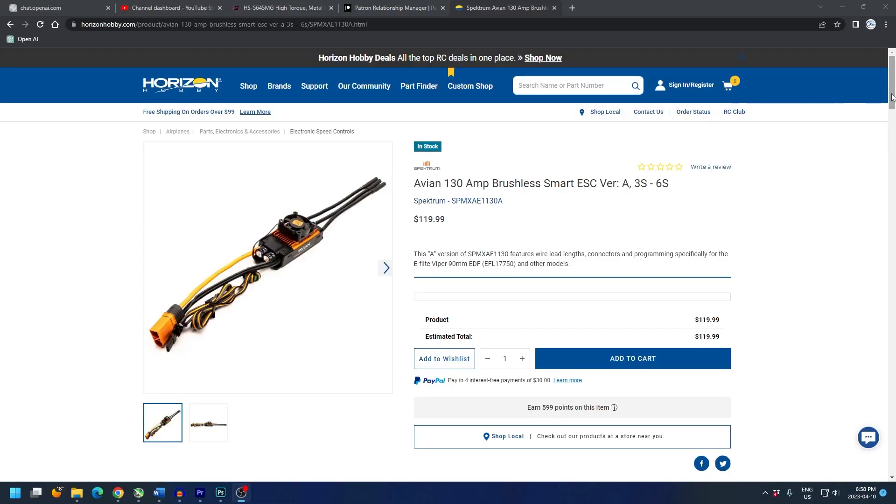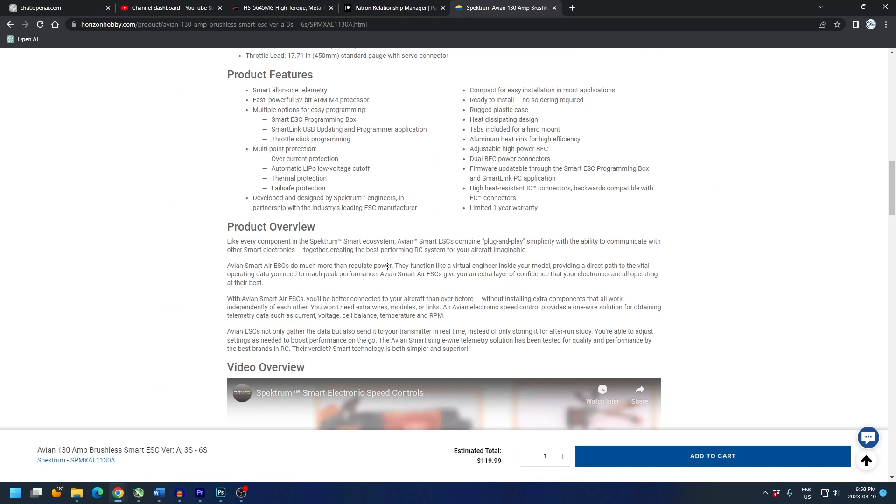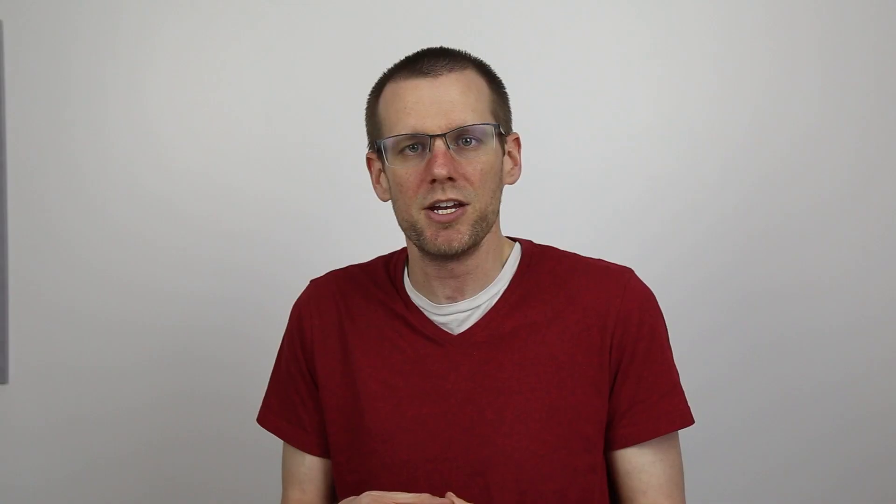This ties into the next item which is using smart sensors. Smart sensors are pretty much available for anything that you can imagine within the means of a radio control vehicle. Even your electronic speed controls are made in a smart type of way which allows the ESC to send data and information through the exact same receiver wire that we've been using for decades. Allowing this type of optimization keeps our systems very simple. This is just another means of getting the information that we require right to our fingertips as we drive that radio control vehicle around.